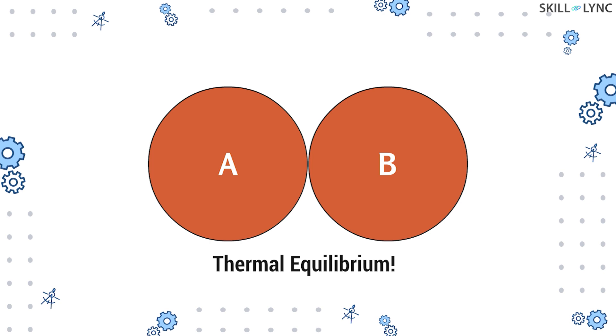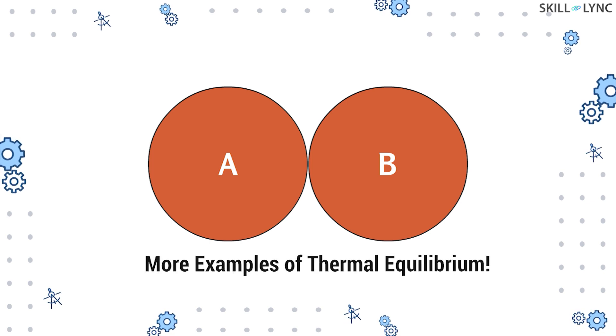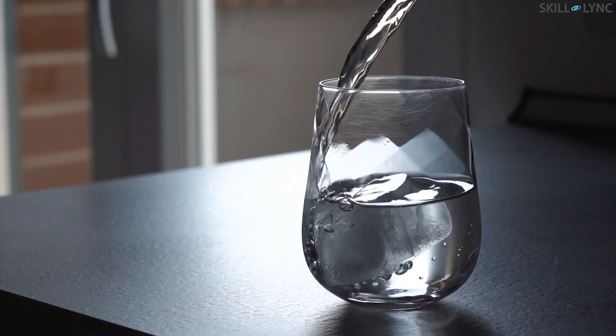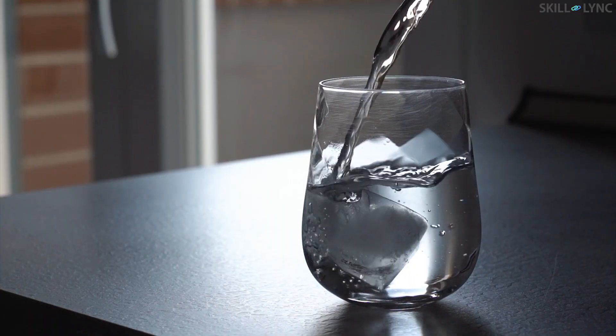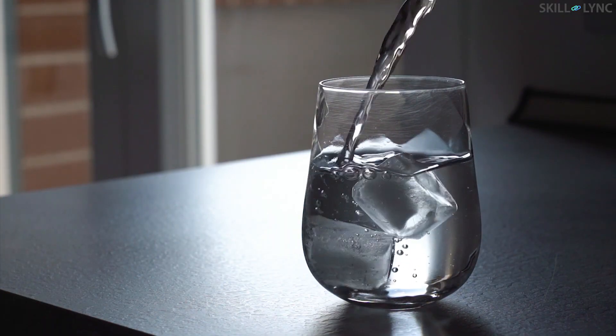This happens because both bodies have attained thermal equilibrium. There are several more examples of attaining thermal equilibrium that we observe in our day-to-day life. The tea getting cold when left on a table, the melting of an ice cube when placed into a glass of water, etc. are few of those examples.